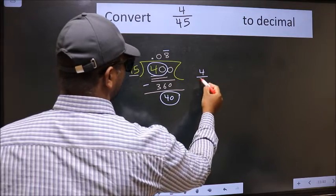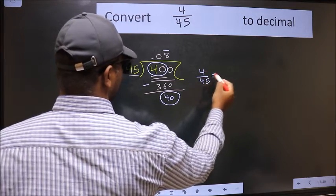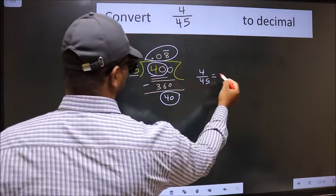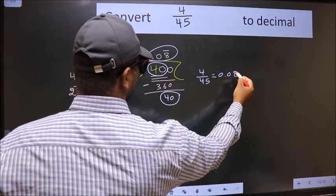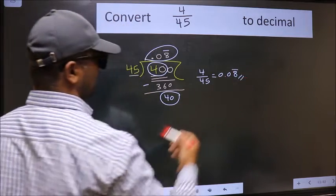Therefore decimal of 4 by 45 is this one. 0.08. Bar on this number is our answer.